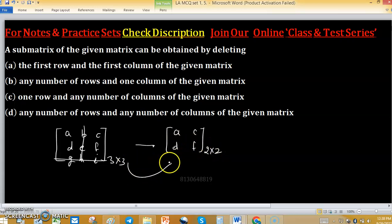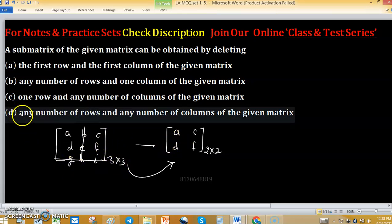So this is a submatrix of this matrix and it can be obtained by deleting the second column and third row. Option D will be correct for this problem.